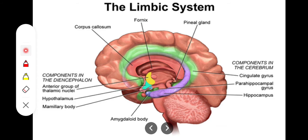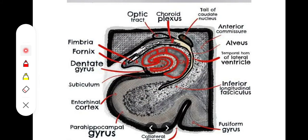The key structures we will study one by one include the hippocampal formation, the amygdaloid nucleus, the anterior thalamic nucleus, the alveus, fimbria, fornix, and the mammillothalamic tract. Also included are the subcallosal gyrus, cingulate gyrus, parahippocampal gyrus, and dentate gyrus. Let's take a look at the first one: the hippocampal formation.